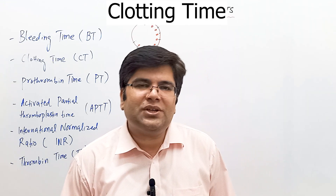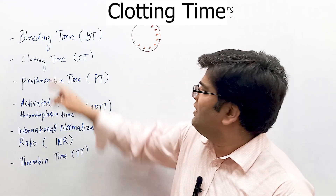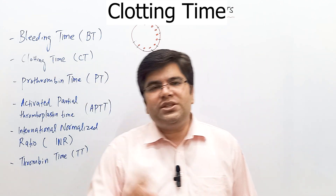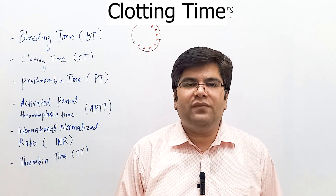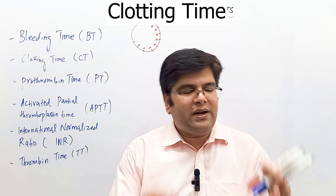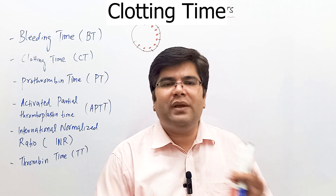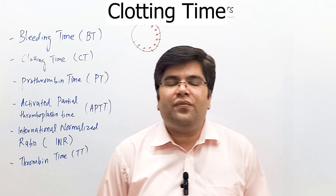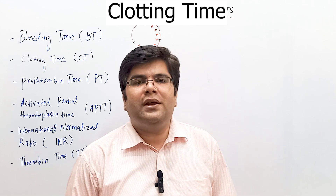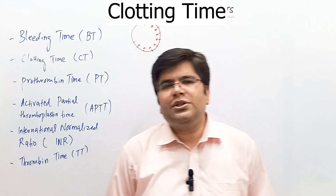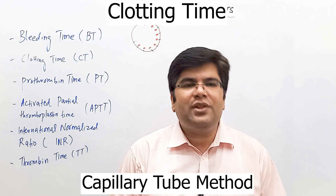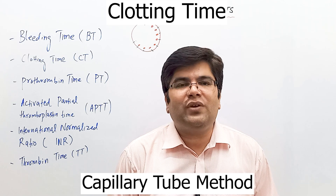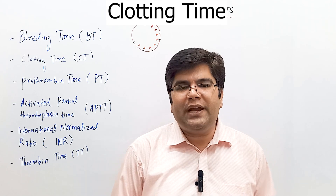The next blood coagulation test is clotting time, also called CT. This is the time interval between the oozing of blood after a cut is made in the skin until the formation of a fibrin clot. It is usually determined by the capillary tube method and its normal value is between three to eight minutes.